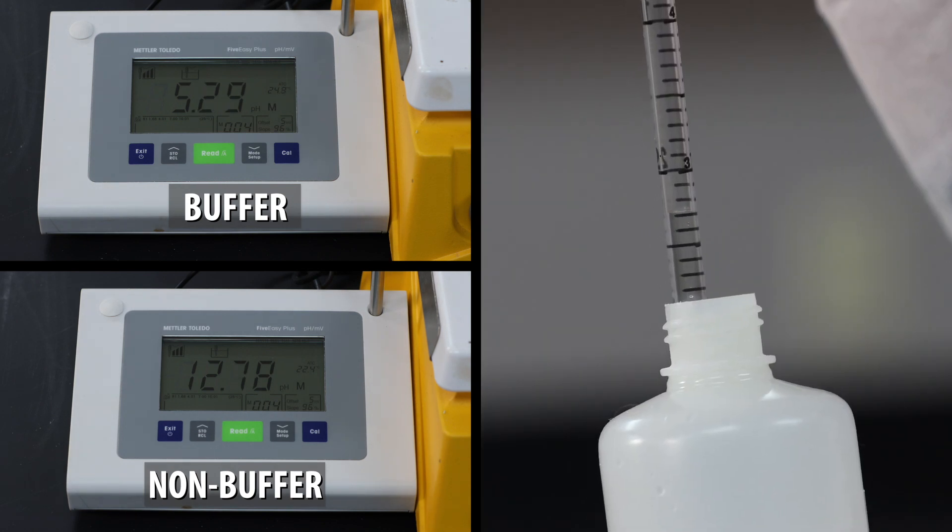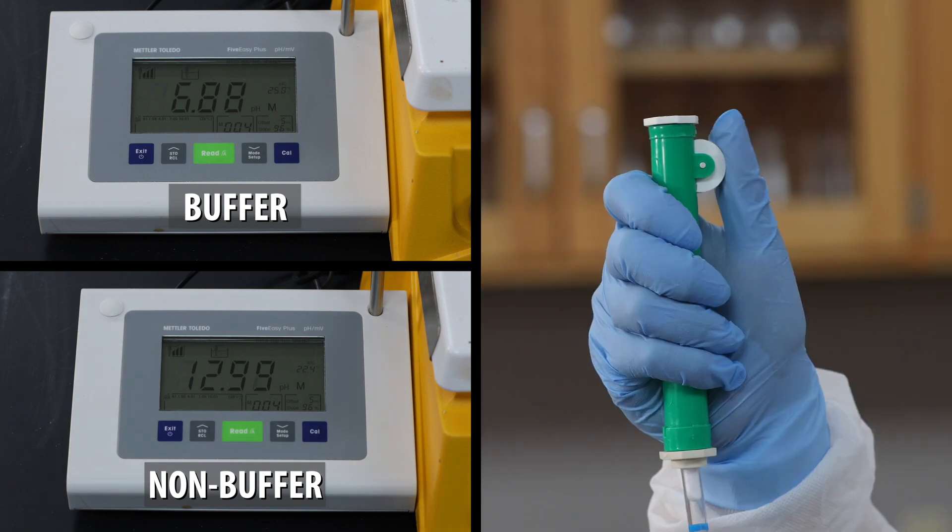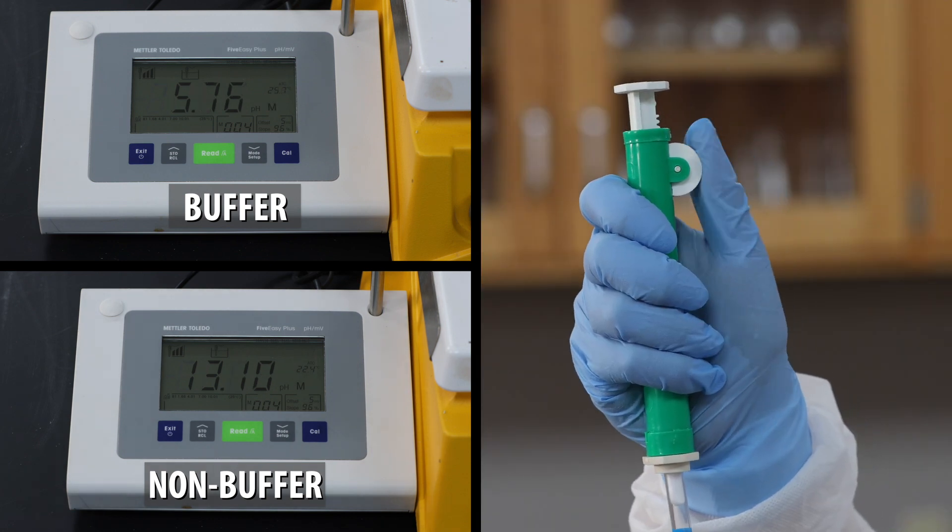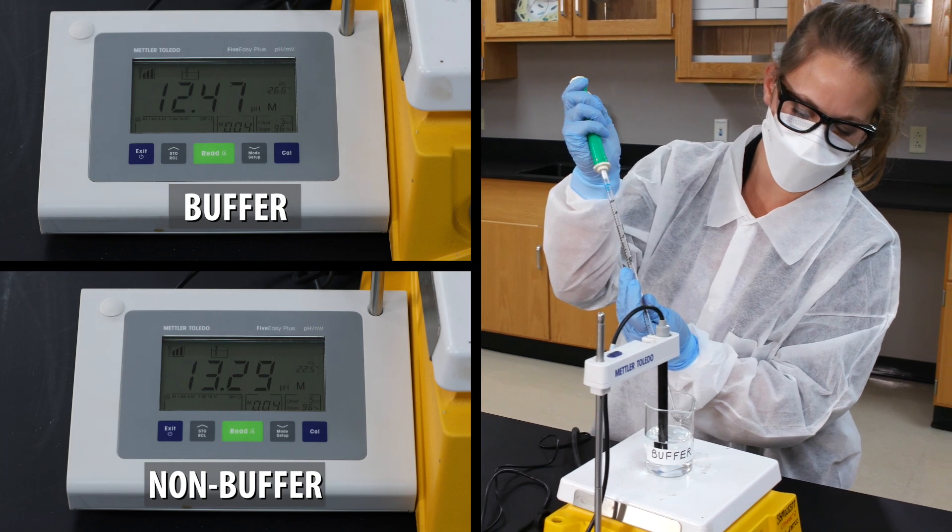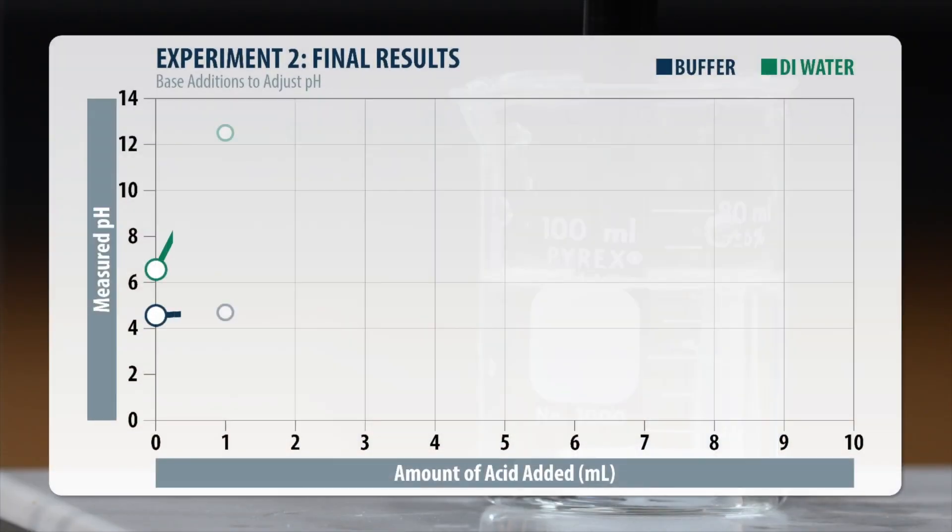Continue adding one milliliter of base to each beaker and record the change in pH. Eventually, after adding seven milliliters of base, the buffer can no longer keep up, but it maintains its stability far better than the water.